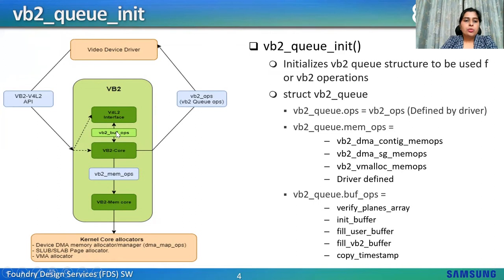This then calls VB2 core queue init in VB2 core, which performs an extra level of sanity check — verifying the queue is not null and that ops like queue_ops, queue_type, and queue_IO_mode are all set. It then initializes queued list, done list, and other queue initialization operations like spin_lock_init and mutex_init. It also checks if the queue is bidirectional to set dma_dir to bidirectional, or if it's output type to set it to DMA_TO_DEVICE, else DMA_FROM_DEVICE. Using these VB2 ops, the VB2 core will talk to the video device drivers.